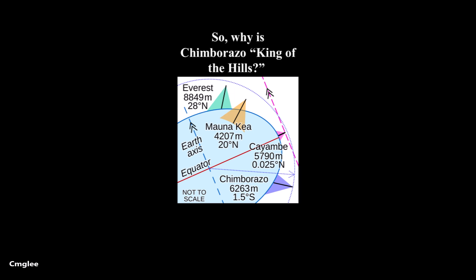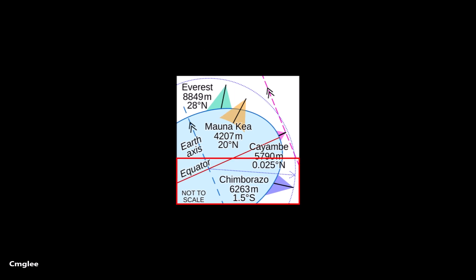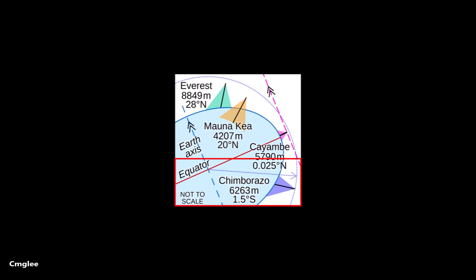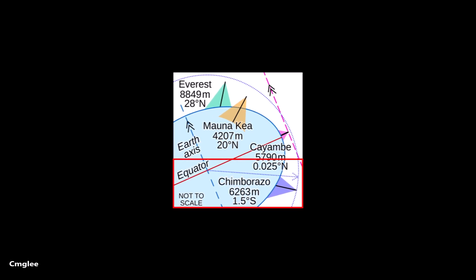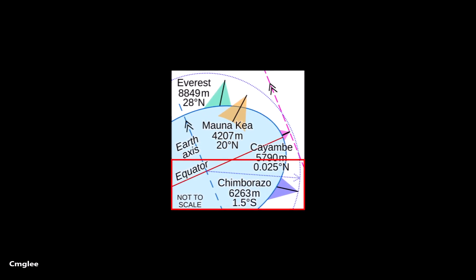So why is Chamborazo king of the hills? Because it is located near the equator where the Earth bulges outward from the center, making Chamborazo the champ.